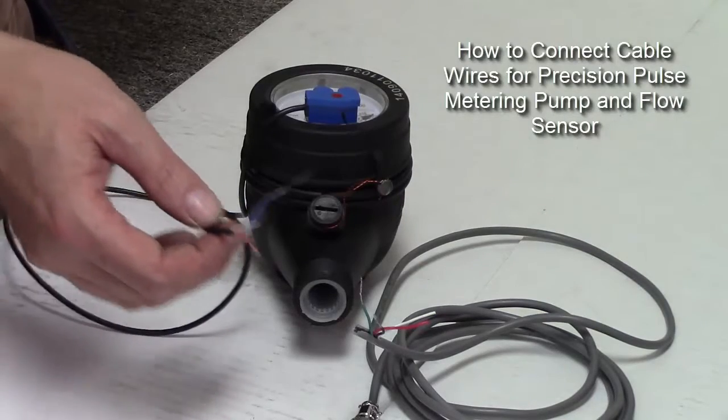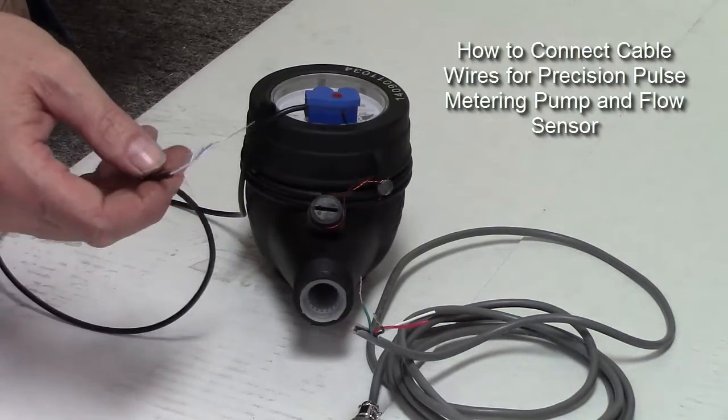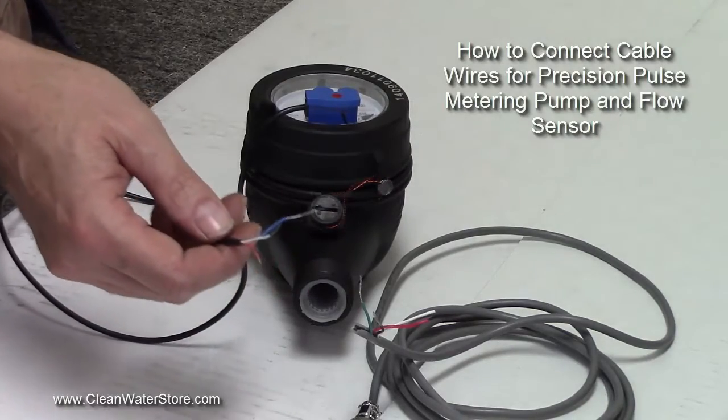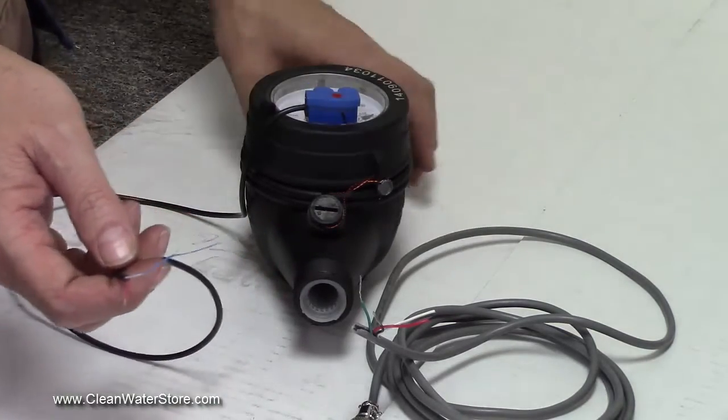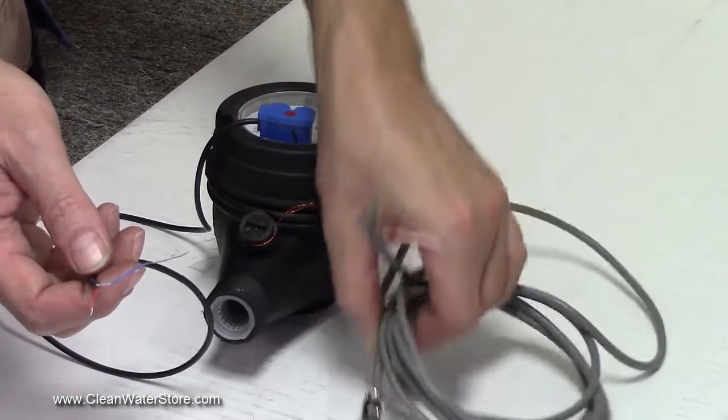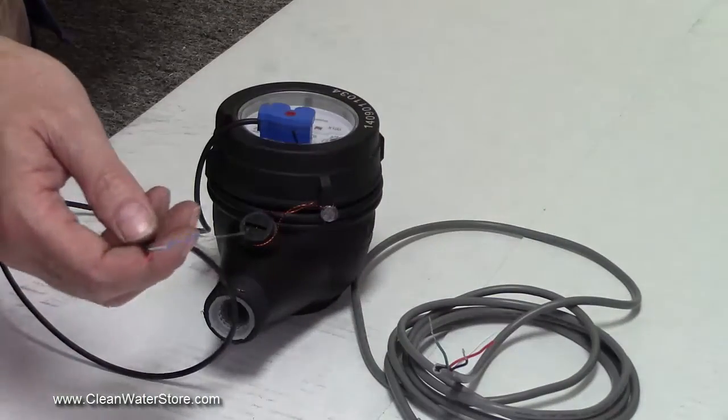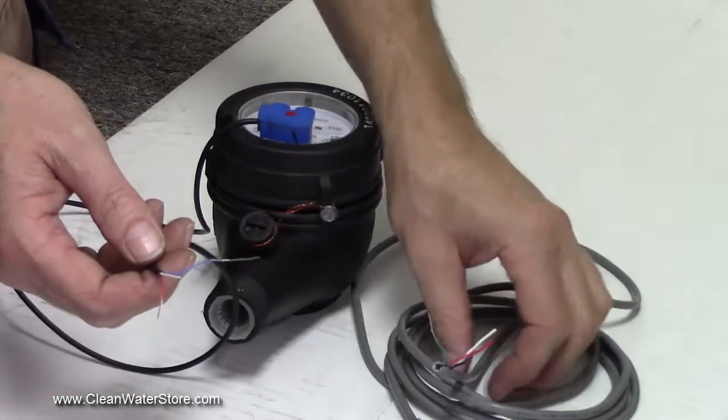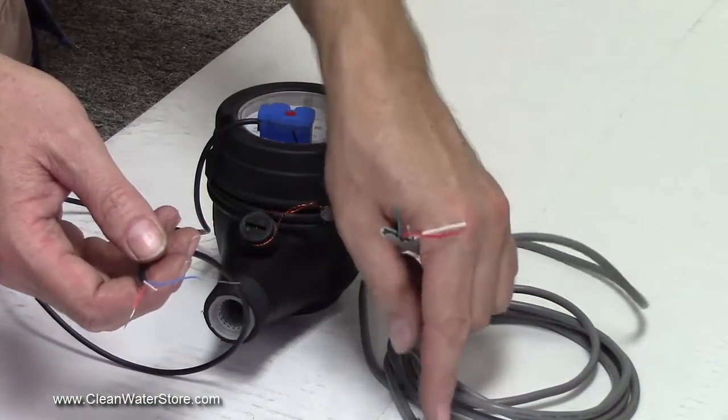Howdy folks, short Clean Water System instructional video on the color coding of the wires to hook your flow sensor up to the cable that goes to the Precision 24 unit. The Precision 24 cable has four connectors and thus it has four individual wires which are green, black, white, and red.